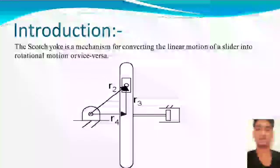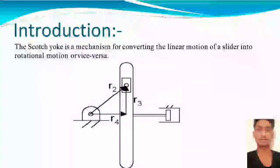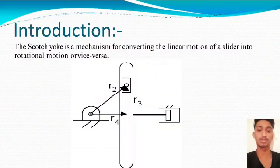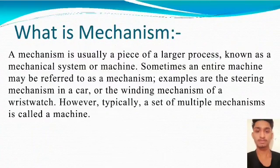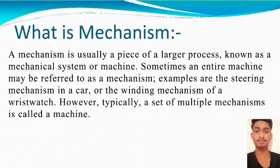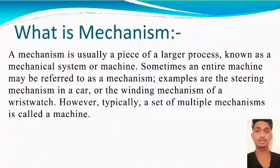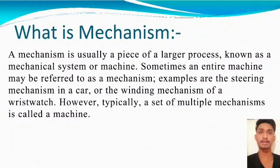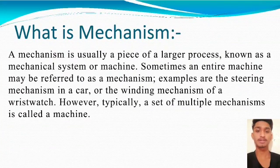Introduction: The Scotch Yoke is a mechanism for converting the linear motion of a slider into the rotational motion, or vice versa. A mechanism is usually a piece of a larger process known as a mechanical system or machine.